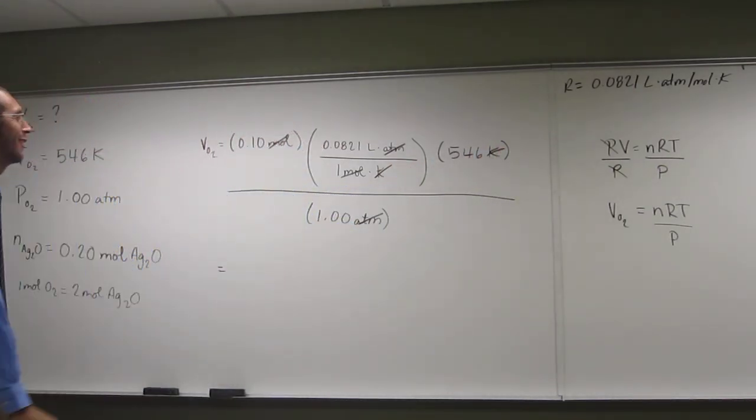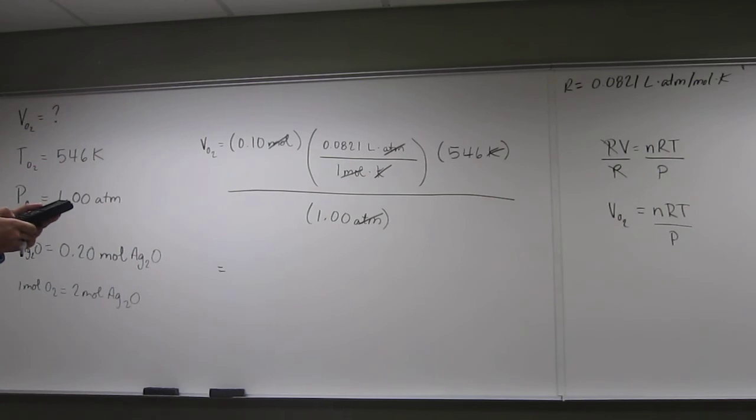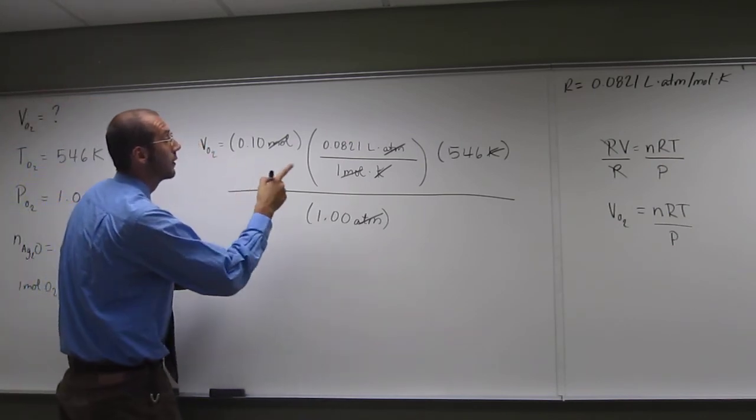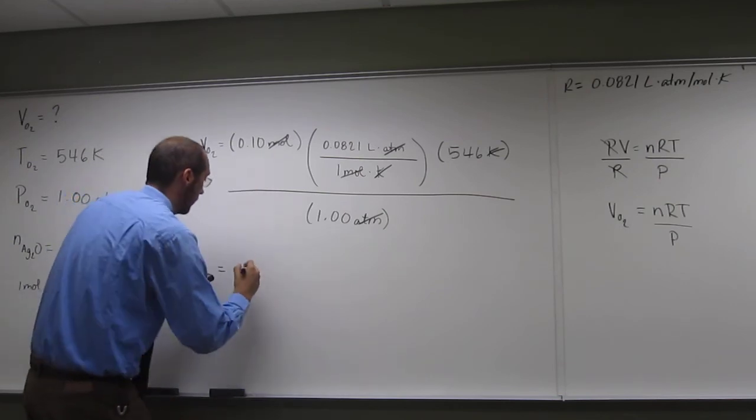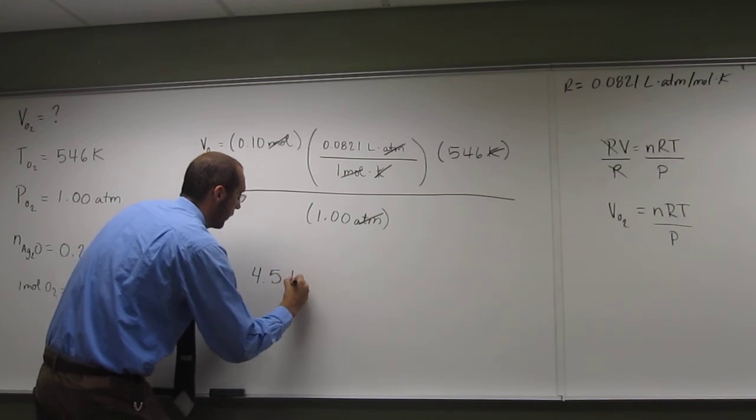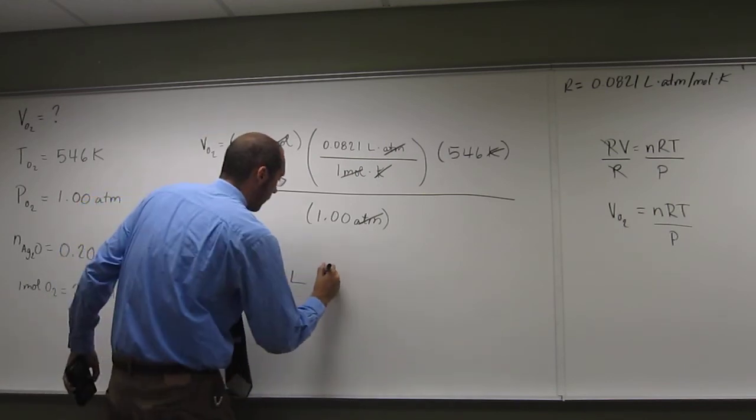0.1 times 0.0821 times 546 divided by 1. So, I got 4.5 liters of oxygen.